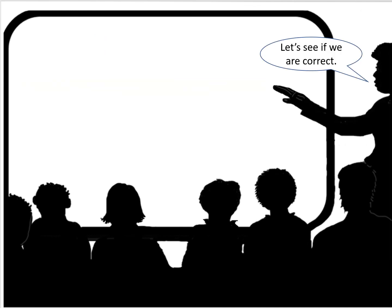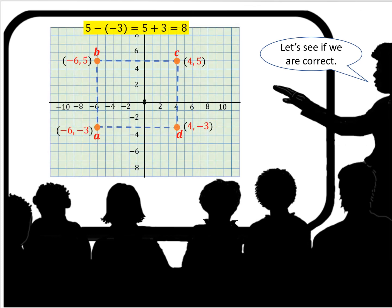Let's see if we're correct. So we said it was 8 between C and D. So here we can just count the spaces. 1, 2, 3, 4, 5, 6, 7, 8. And there you have it.